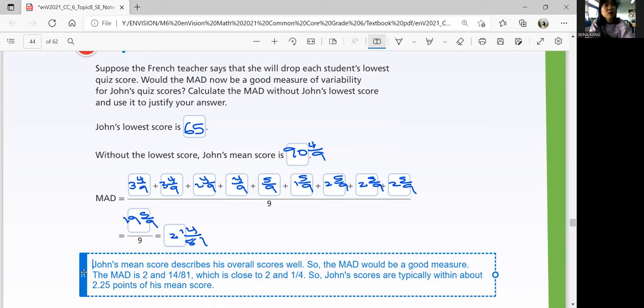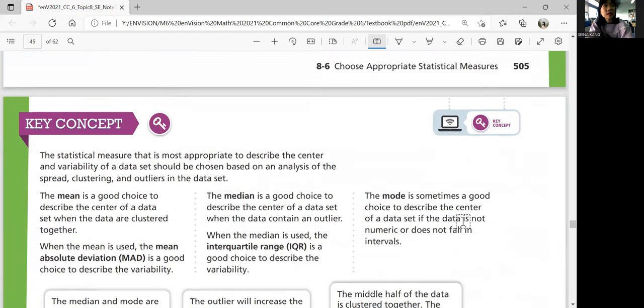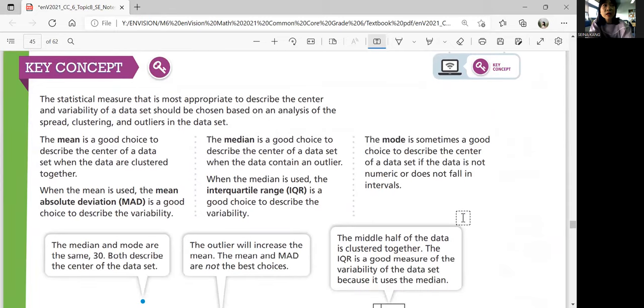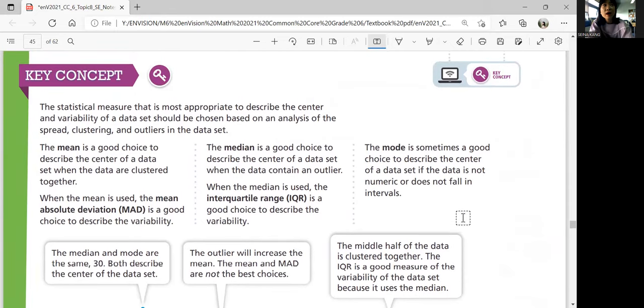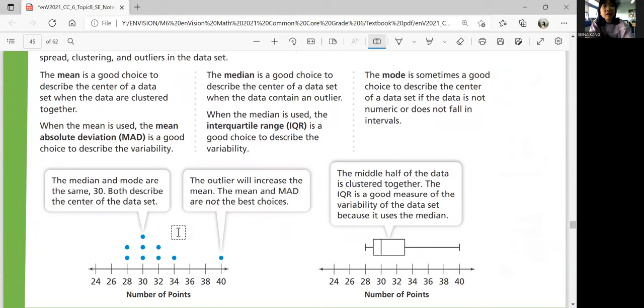Now we know how to determine which one is a good measure. So let's summarize our lesson. Key concept. The statistical measure that's most appropriate to describe the center and variability of data assets should be chosen based on an analysis of the spread, clustering, and outliers in the data set. So you need to be able to figure out the mean, median and mode and see which one is the most appropriate. And if your mean is the most appropriate, you can use MAD to describe the variability. If the mode is the most appropriate, you can use the IQR to measure the variability.